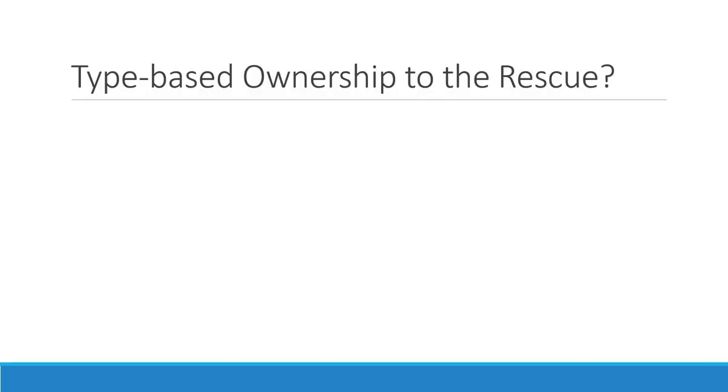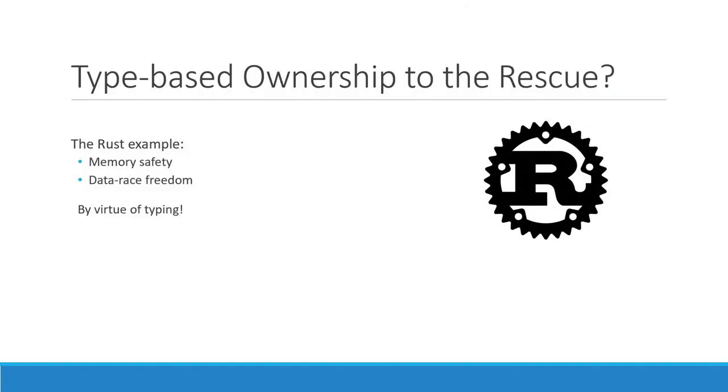What are the other possibilities? Over the past 20 years, there has been a lot of research into type-based aliasing control systems in the PL community, with languages such as Cyclone or Vault. This idea has finally made its way into mainstream languages such as Rust. Rust provides many fascinating guarantees such as memory safety and data-race freedom, all by virtue of typing — if a Rust program type-checks and compiles, you are guaranteed memory safety and data-race freedom.